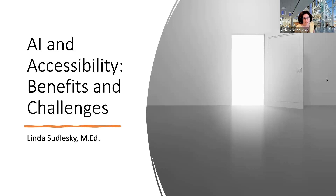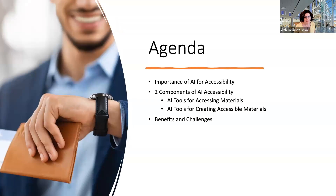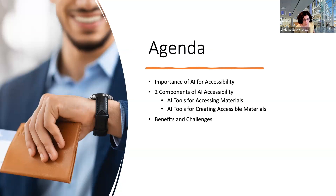I'm a learning designer at Learning Design Services here at UMass Boston. Part of my role is as an accessibility specialist. I believe in the impact of AI on accessibility and how important it is to talk about it and make sure everybody is aware of the tools available. Today we're going to talk about the importance of AI for accessibility, share some statistics, two components of AI accessibility — tools for accessing materials as well as creating them — and then benefits and challenges. I welcome you to share your ideas throughout the presentation in chat.